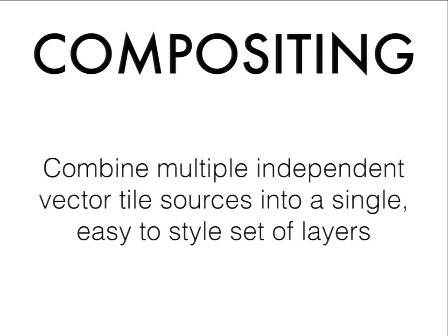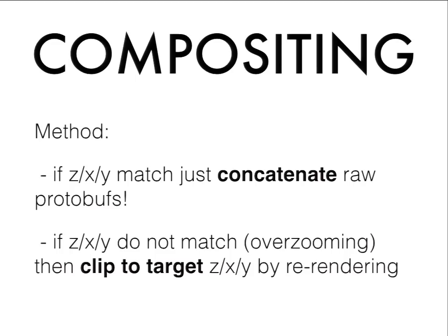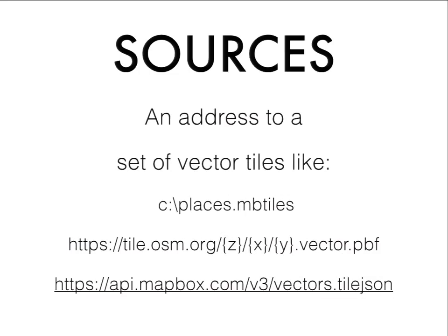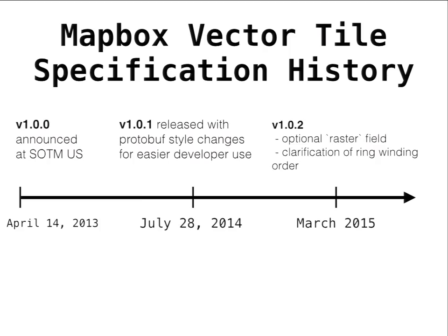Vector tiles also support compositing: you can take multiple tiles and concatenate them together. The Google protobuf format allows this — it doesn't really matter whether you're parsing two tiles with one layer or one tile with two layers; it's basically the same to the encoders and decoders. So you can mash up multiple data sets on the server side and return them to a client with just one request, which can really help performance. If the Z/X/Y coordinates match, you can just concatenate; if they don't, you just re-clip one tile and combine them. A vector tile source can be vector tiles in an MBTiles file on the file system, at a URL, or described by a metadata file like tile.json.